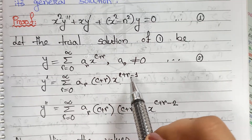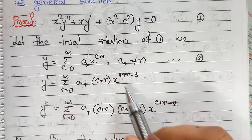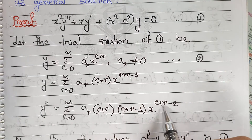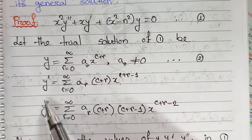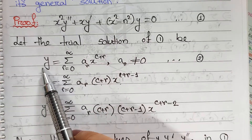n is 0. So n is 0. c plus r minus 1 times x, and it is minus 2. Then y double prime, y single prime, and y.